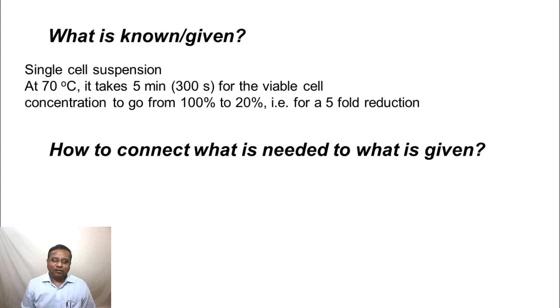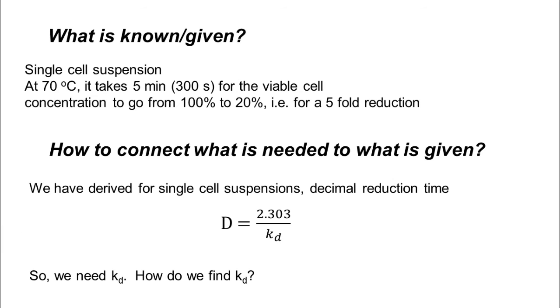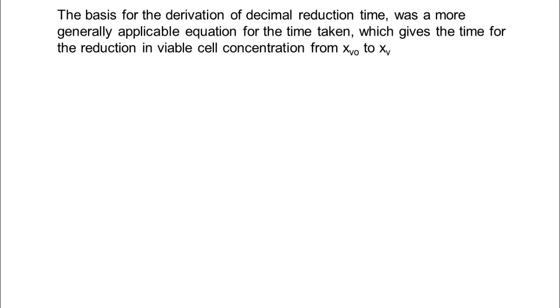Then the third main question: how to connect what is needed to what is given? If you think about it, I am sure quite a lot of you would have solved this. We have derived the decimal reduction time, which we also reviewed a few minutes ago, as 2.303 by kd. Therefore, we need kd. If we have kd, we can find out d, which is the decimal reduction time, which is what is required in part A. How do we find kd? To do that, let us go back and look at the basis for the derivation of decimal reduction time.